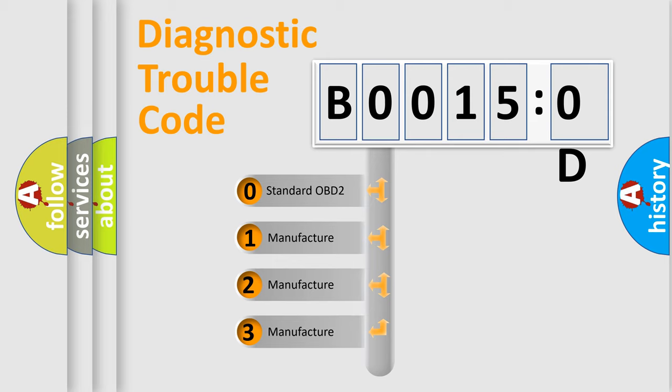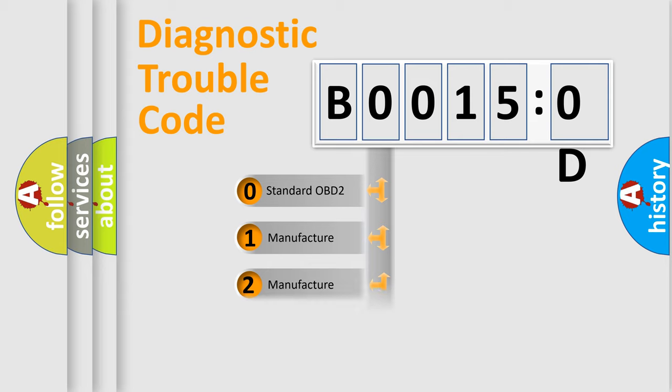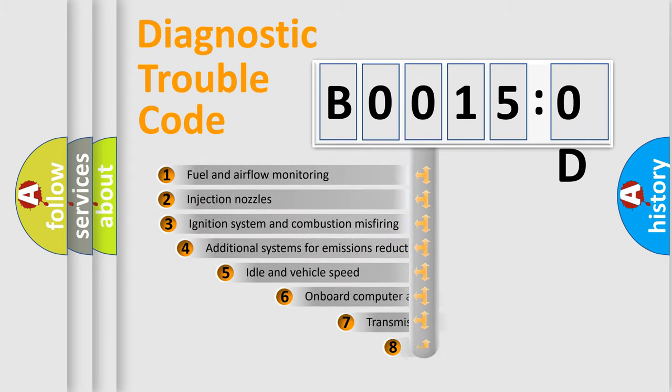If the second character is expressed as zero, it is a standardized error. In the case of numbers 1, 2, 3, it is a manufacturer-specific expression of the car-specific error.